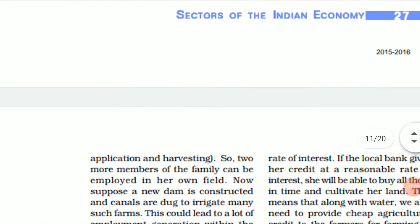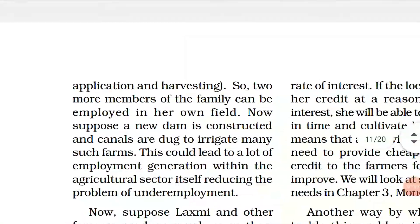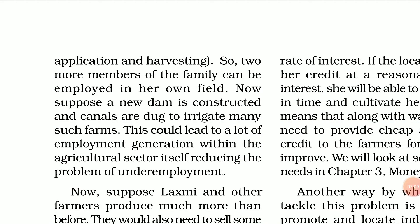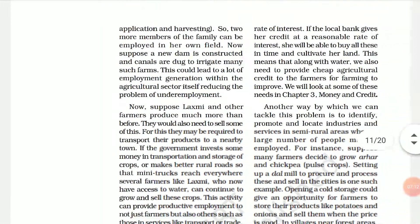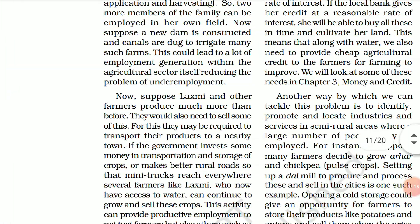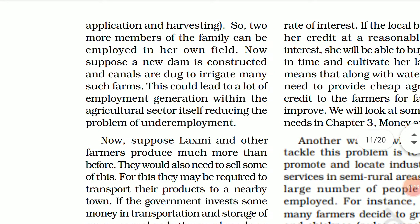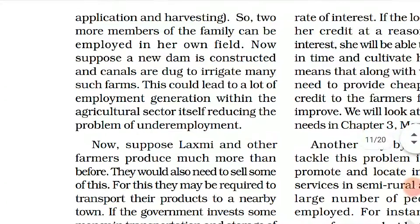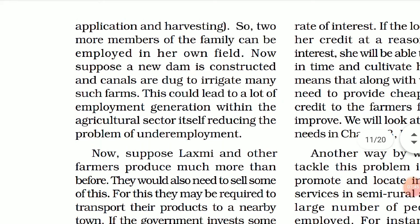Let us suppose that one hectare of wheat can provide employment to two people for 50 days, including sowing, watering, fertilizer application, and harvesting. So in Lakshmi's example, large land owners, government, or banks can provide them money at low interest, and by this they can increase their production. Pehle Lakshmi jo thi, who had to depend on monsoon to irrigate her field, now she can construct a well. She can also take the rabi crop — pehle jo wo keval jowar aur arhar grow kar rahi thi, now she can even grow wheat. So two more members of the family can be employed on her own farm.